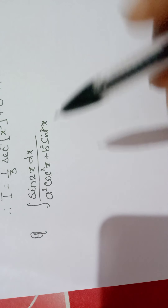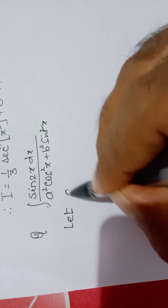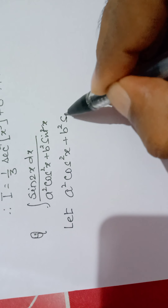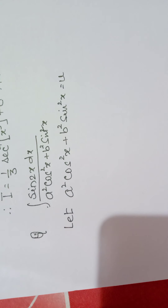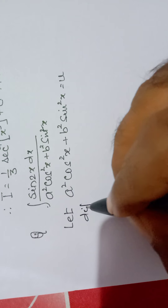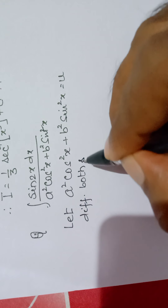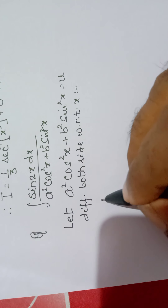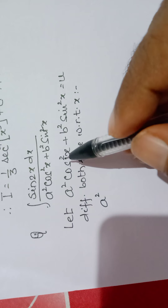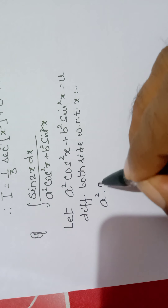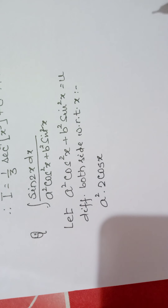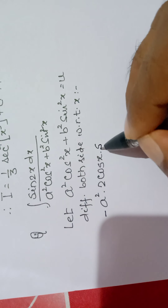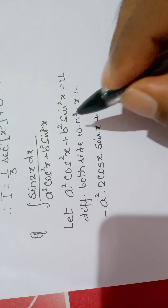Substitute the denominator: let a² cos²x plus b² sin²x equals u. Differentiate both sides with respect to x. Since a² is constant, differentiate cos²x first using the chain rule: 2 cos x times (minus sin x), giving minus a² times 2 cos x sin x.